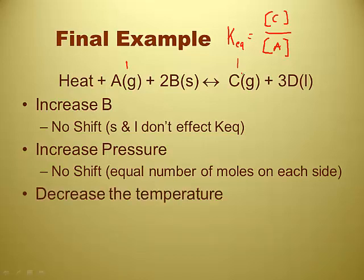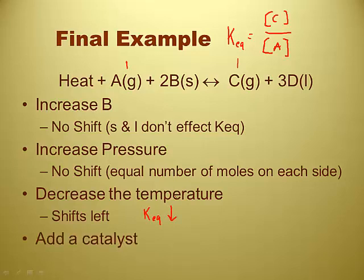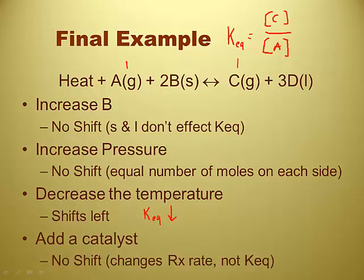What about decreasing the temperature? Heat is written on the left — treat it like one of the substances. If you're decreasing the temperature, you're decreasing the energy and the heat. That means it's going to shift to the left to fill the void. Shifts to the left, shifting away from the products, making less products — therefore KEQ goes down. That's the only one that changes the value of K. And finally, what happens if we add a catalyst? Absolutely nothing — no shift. It changes the rates, but it doesn't change the actual KEQ or where the reaction wants to finally settle. That's it.